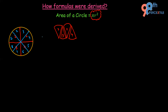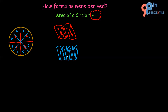Now I pick up these eight parts and rearrange them again. If you observe, the parts have become narrower. So let's arrange them: first, second, third, fourth — and similarly I place the fifth, sixth, seventh, and eighth parts alongside.